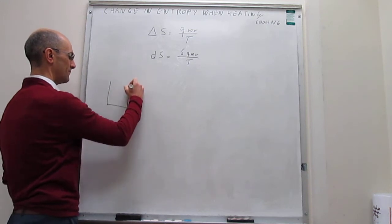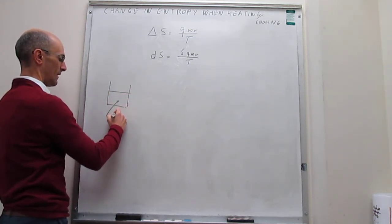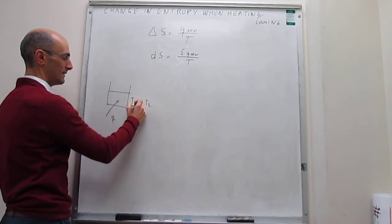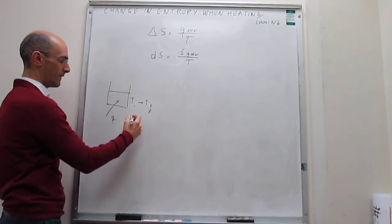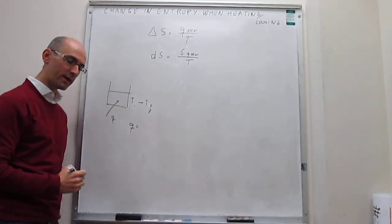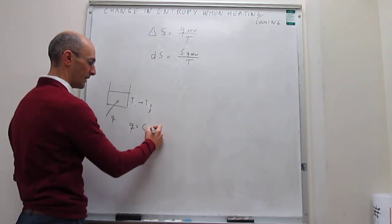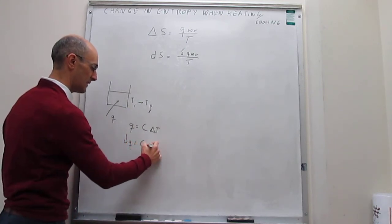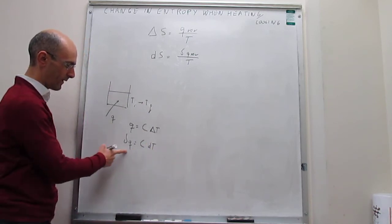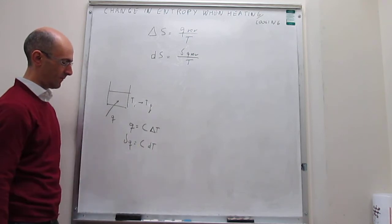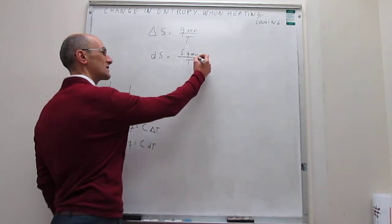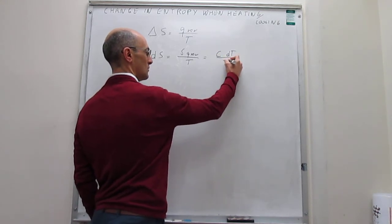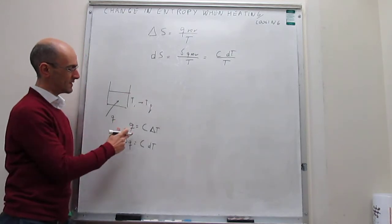Our example is simply a glass of water in which you apply some heat to elevate the temperature, and the temperature changes from T1 to T2, or from an initial temperature to a final temperature. Now, we know that the heat when heating or cooling a system is simply the heat capacity multiplied by the change in temperature. If we are doing an infinitesimal change in heat, then this expression turns into an infinitesimal heat equal to an infinitesimal change in temperature. So we arrive at dS equal to the heat capacity times dT over T.